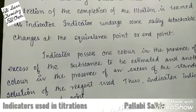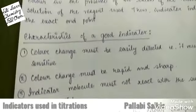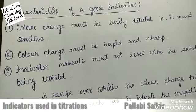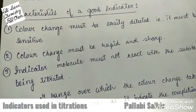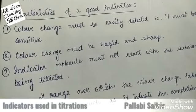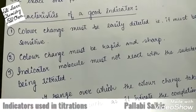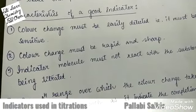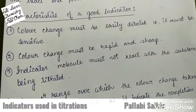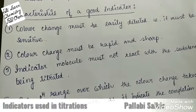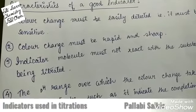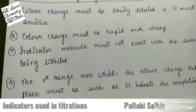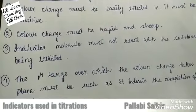What are the characteristics of a good indicator? Number one: during titration the color change must be easily detectable; the indicator must be sensitive. Number two: the color change must be rapid and sharp. Number three: the indicator molecule must not react with the substance which is going to be titrated. Number four: the pH range over which the color change takes place must be such that it indicates the completion of the reaction.